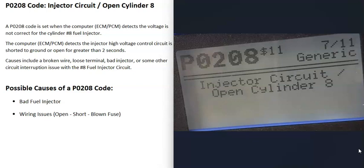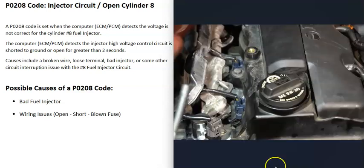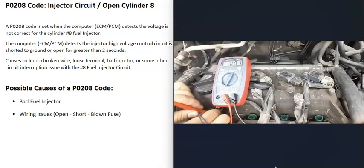What would be some possible causes of a P0208 code? The main things that are going to cause this are either a bad fuel injector on cylinder number eight, or some kind of wiring issue going to it. There are different ways to go about troubleshooting this.